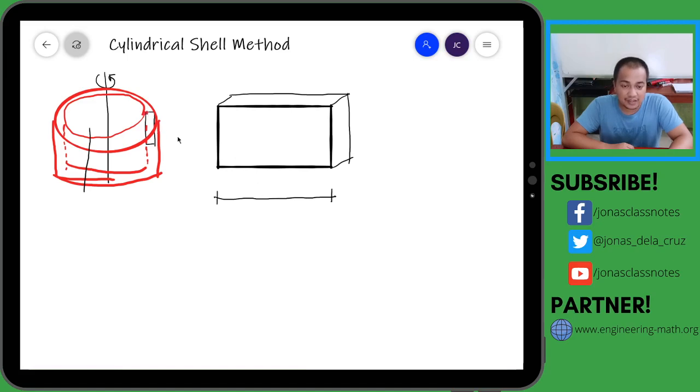So we can assume that this length is the average of the two circles. In this case, this is 2π times the radius. The radius from this axis papunta dito sa gitna ng rectangular element natin - yan yung radius natin.